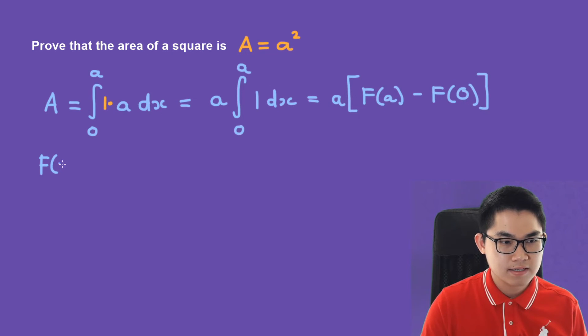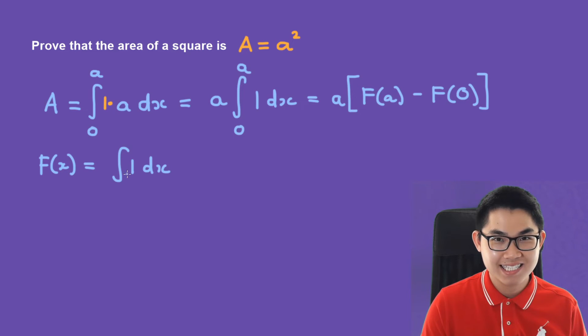1 dx. So what is the anti-derivative of 1 dx? It is just going to be x plus c. We need to find f at a.